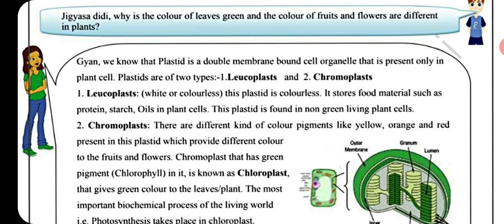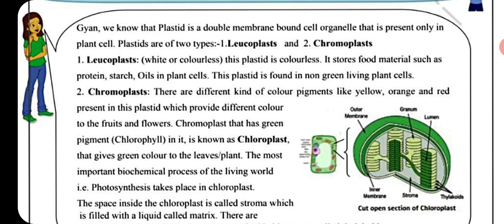Chromoplasts have different kinds of color pigments — like yellow, orange, and red — present in this plastid, which provide different colors to the fruits and flowers. The chromoplast that has the green pigment chlorophyll in it is known as chloroplast.